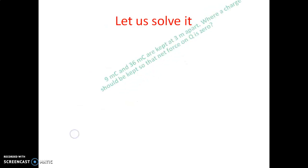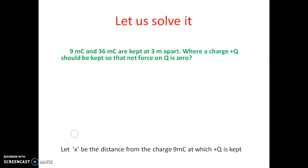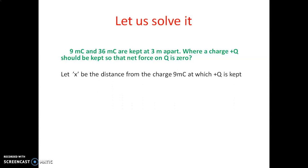Now we will discuss a problem. Charges of 9 millicoulombs and 36 millicoulombs are kept 3 meters apart. Where should a charge +Q be placed so that the net force on Q is zero? We assume the charge is kept at a distance x from the 9 mC charge, so its distance from the 36 mC charge is (3 − x). For the net force to be zero, the force on Q due to 9 mC must equal the force on Q due to 36 mC.